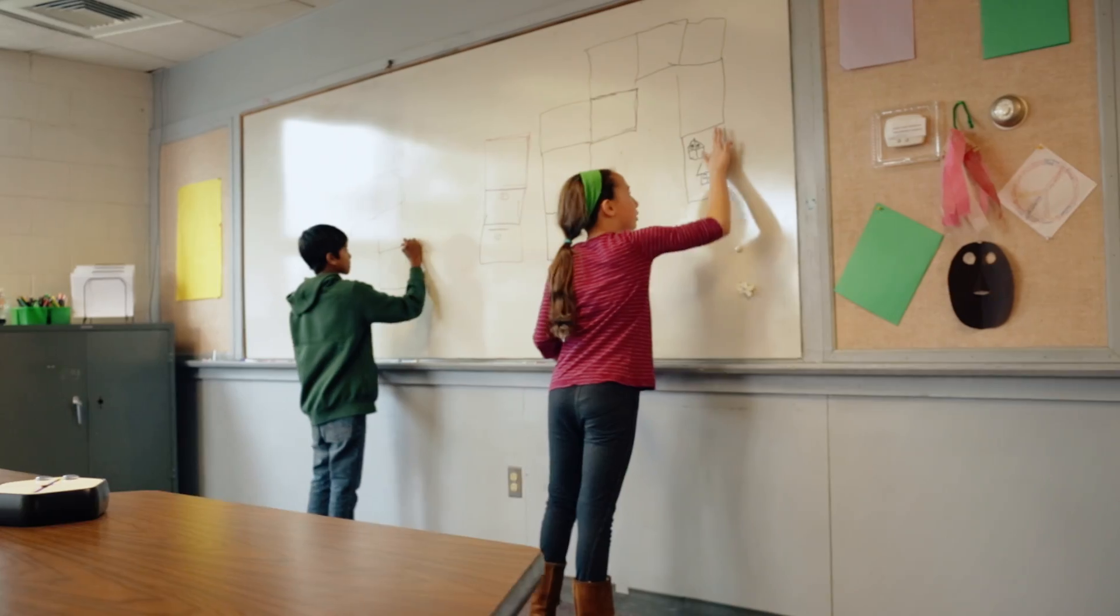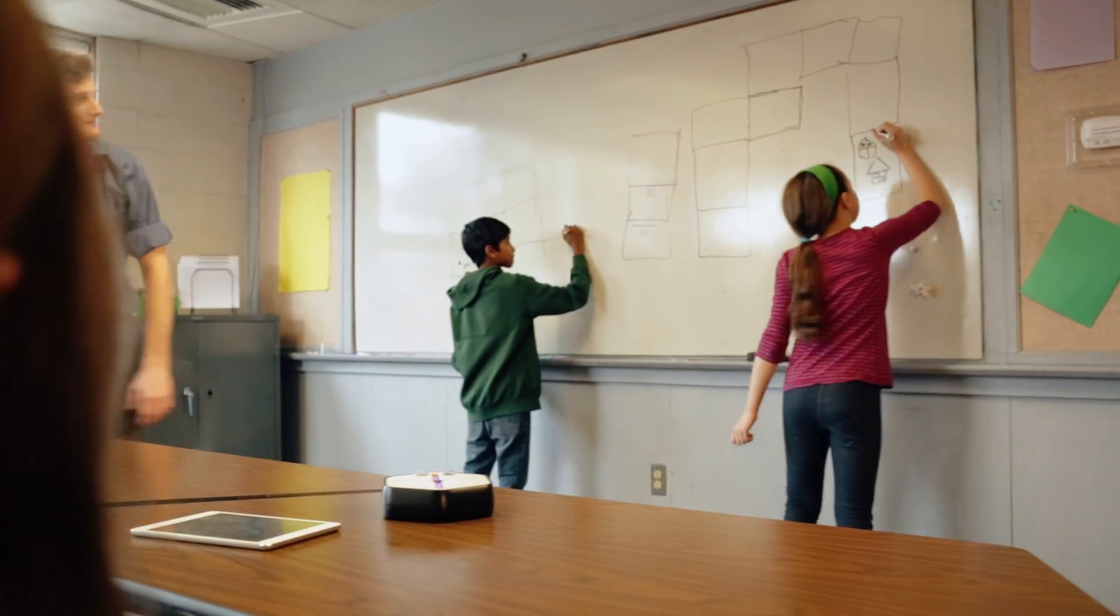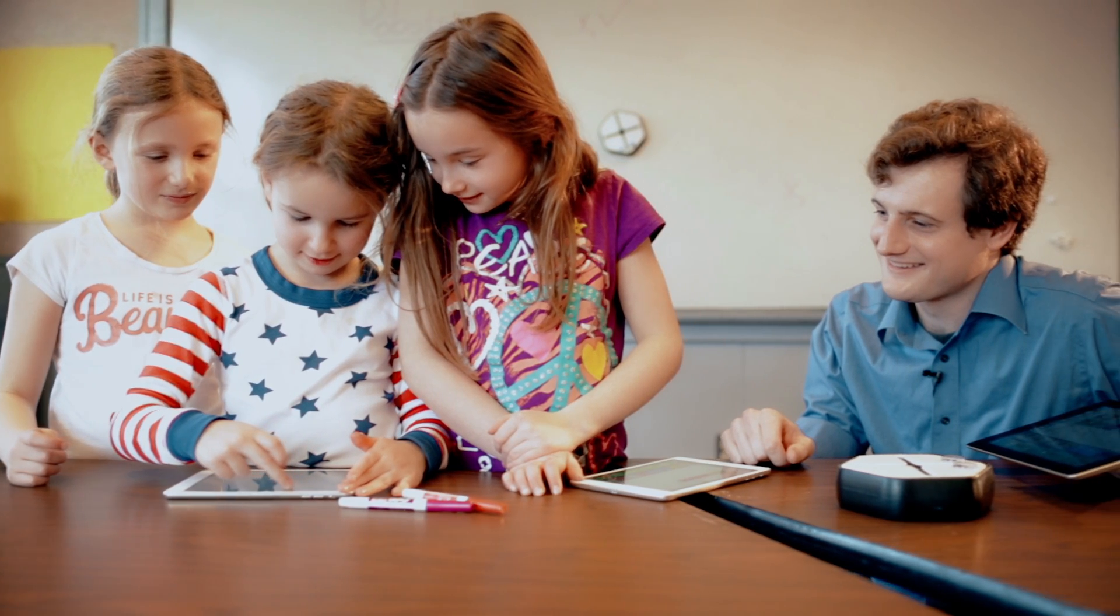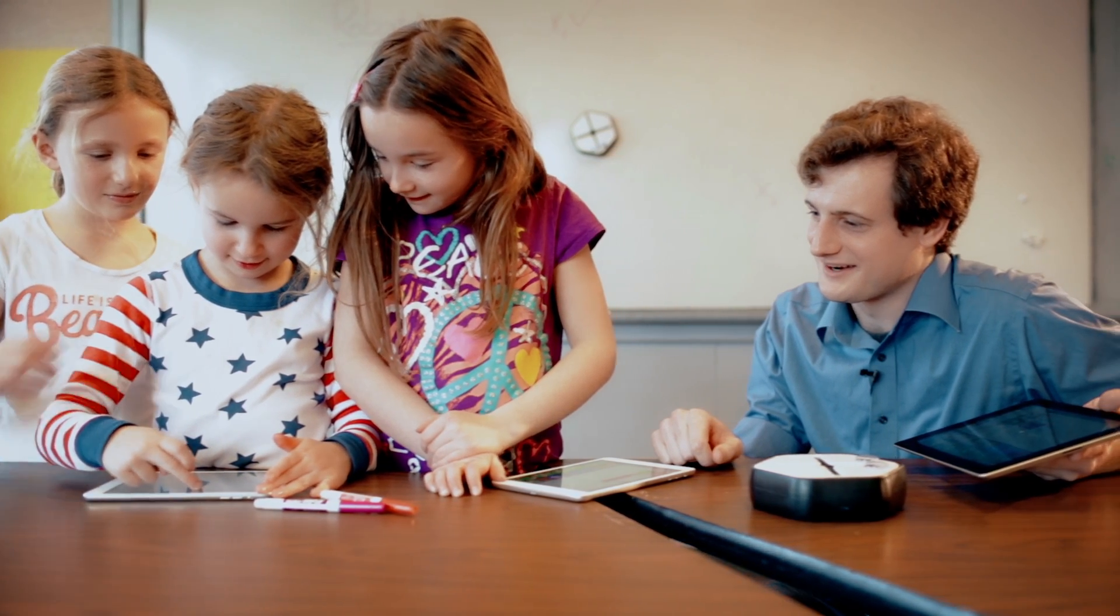So with Root, really, the barrier to entry from a cost perspective is the cost of a textbook. What we're essentially doing is creating a robot that just works, right out of the box, as simple to use as a tablet or app, that the kids will love, that the teachers will love.